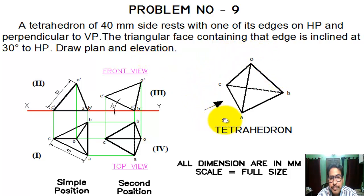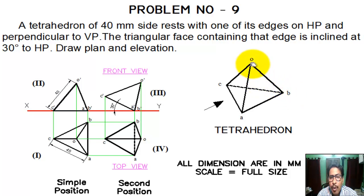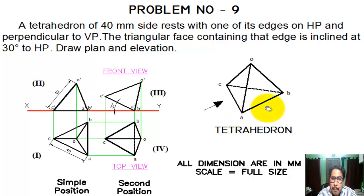This is the 3D view of a tetrahedron. A tetrahedron has four equal faces, all equilateral triangles. The faces are: A, B, O — equilateral triangle; O, C, B — equilateral triangle; O, C, A — equilateral triangle; and base A, B, C — also an equilateral triangle.